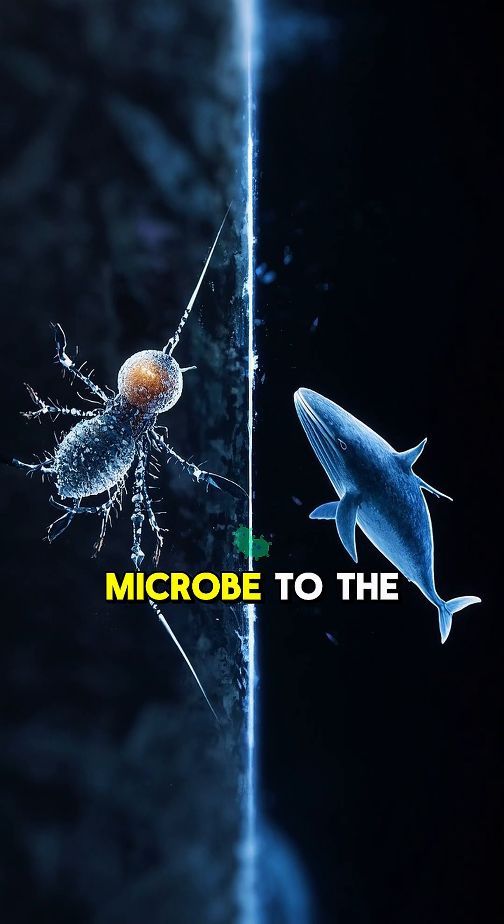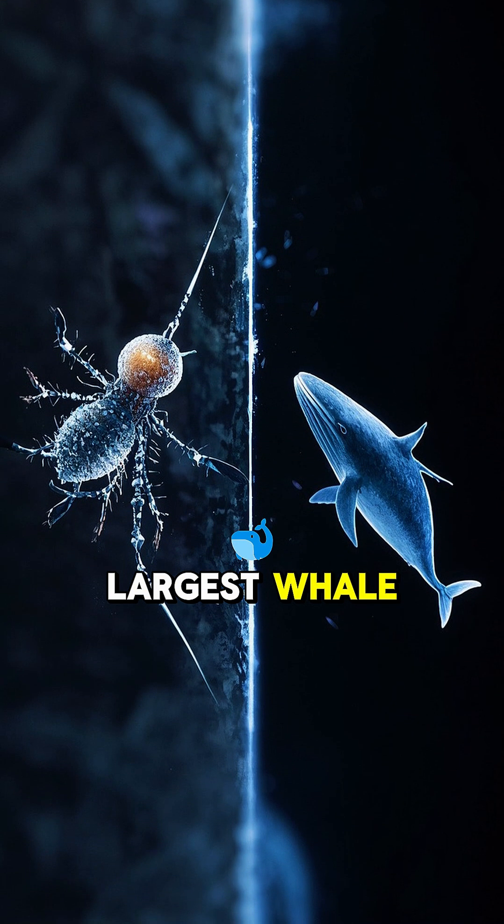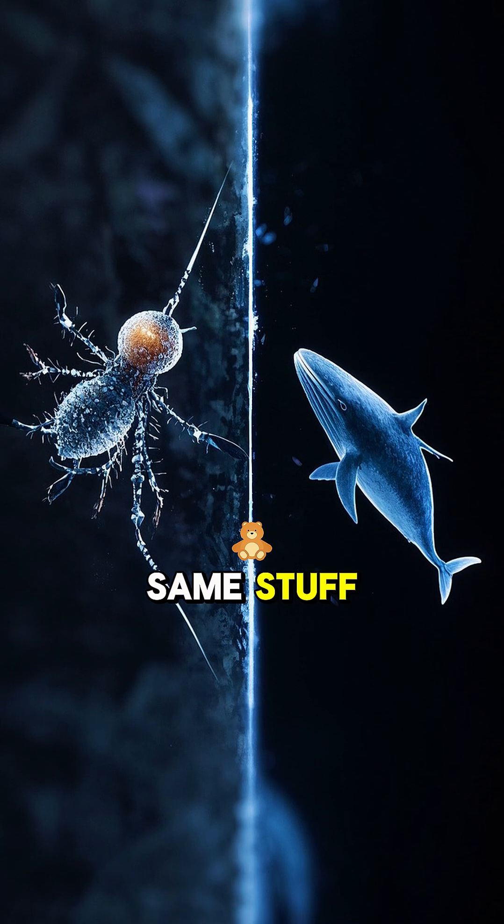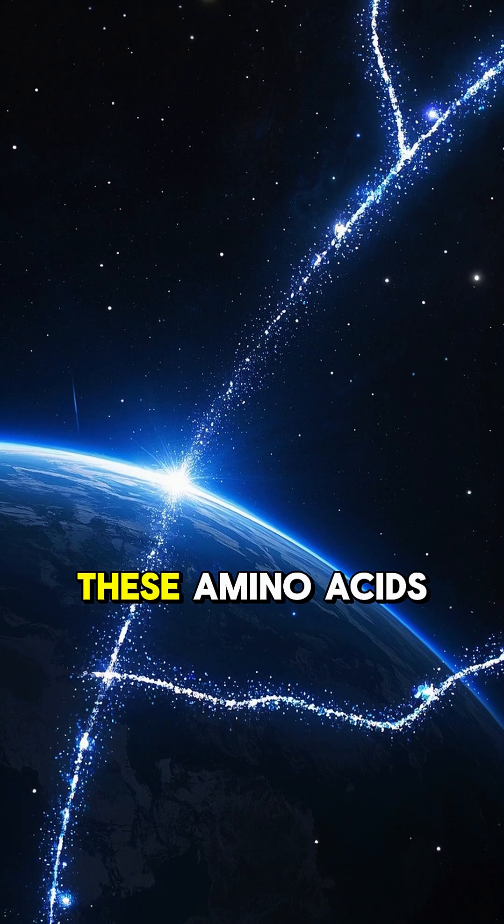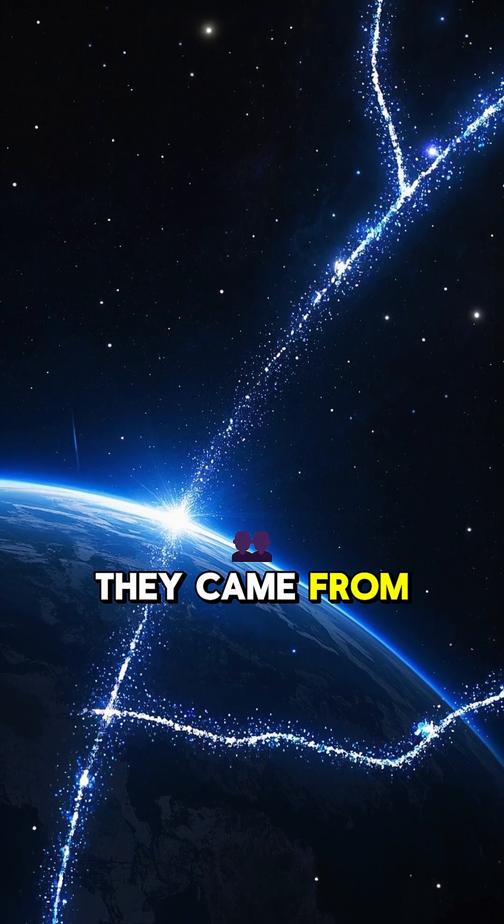From the smallest microbe to the largest whale, every living thing on Earth is made of the same stuff: carbon, hydrogen, oxygen, and nitrogen. But where did these amino acids come from? They came from space.